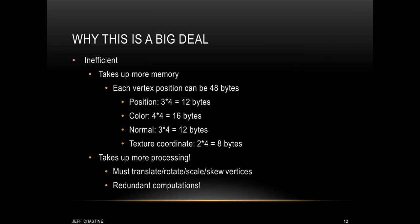So, you probably figured out why this is a big deal. The way that we were doing it before was really inefficient. First of all, it's going to take up more memory. You have to understand that later on in the course, each vertex is going to take up about 48 bytes. Now, where does the 48 bytes come from? 12 bytes of that is going to be for position, because of X, Y, and Z. 16 bytes of that is going to be for color, RGBA. 12 more bytes of that are going to be for normal, which we'll talk about later. And then 8 bytes of that are going to be used for something called a texture coordinate.